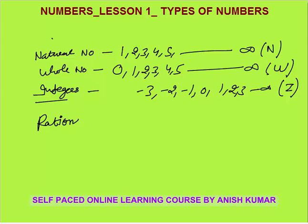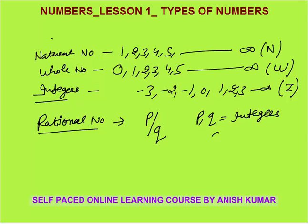Next are rational numbers. What are rational numbers? Any number that you can write in the form of P by Q, where P and Q are integers, but the condition is that Q should not be equal to 0. For example, is 5 a rational number? Pause the video, think about it for one minute. Yes, 5 is a rational number because 5 can be written as 5 by 1.